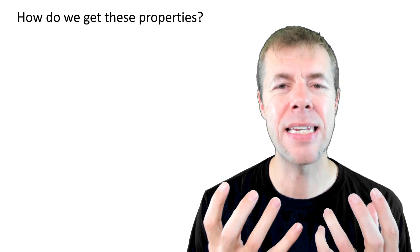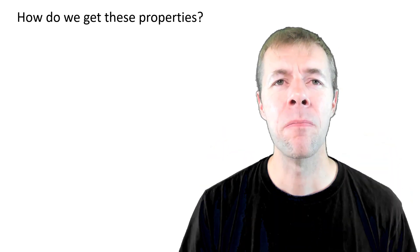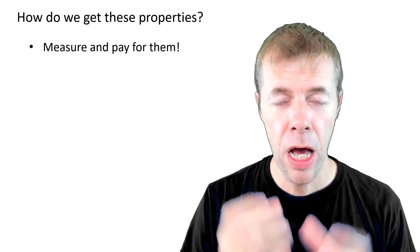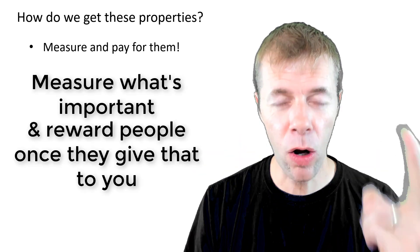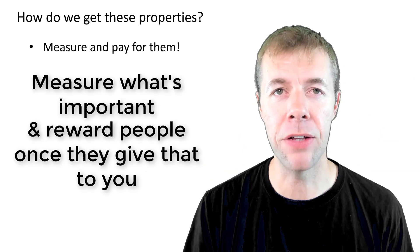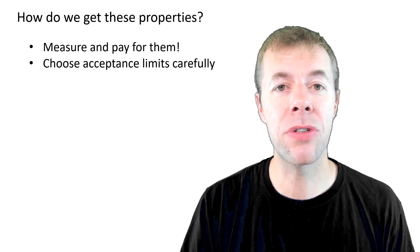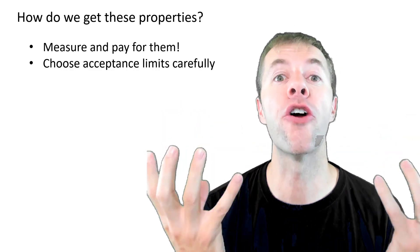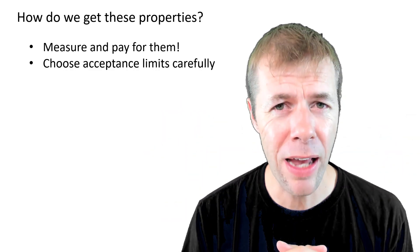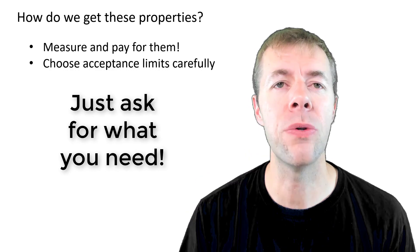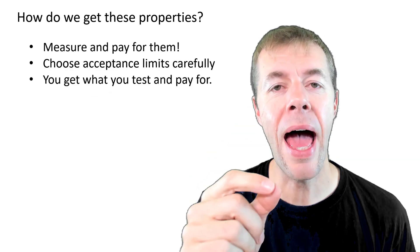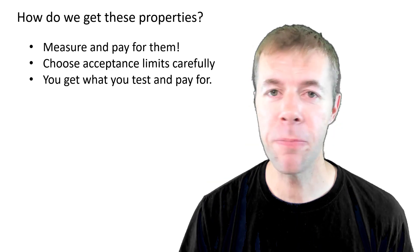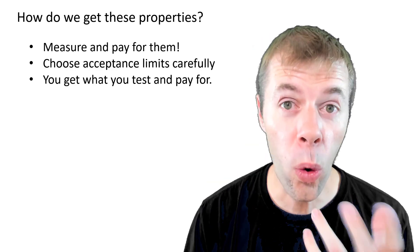But how do you get the properties? Well, you have to measure and pay for them. Two different things. Measure what's important and also reward people once they give that to you. You need to choose your acceptance limits carefully. A lot of engineers like to decide, man, I want the best. I want the greatest there is. Do you really need that? Just ask for what you need and you're going to get for what you test and pay for. And you shouldn't expect to get any more or less.